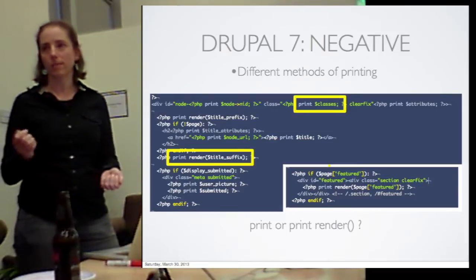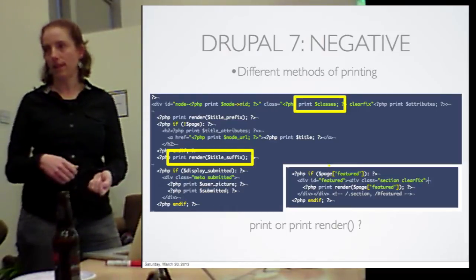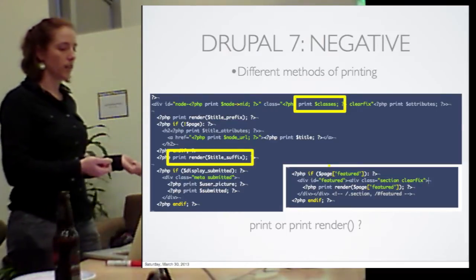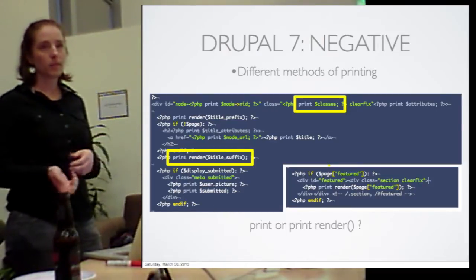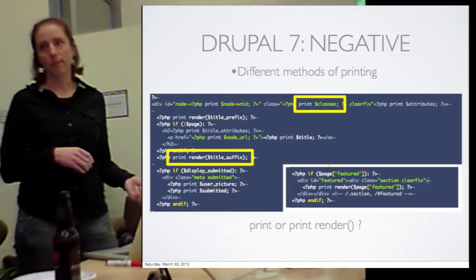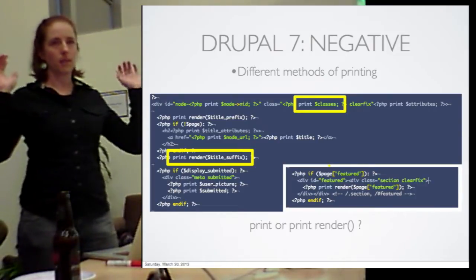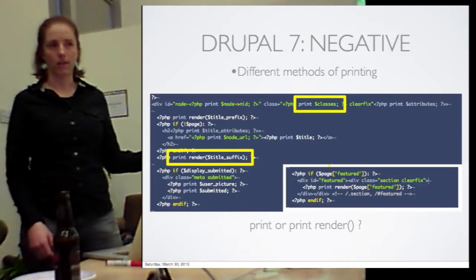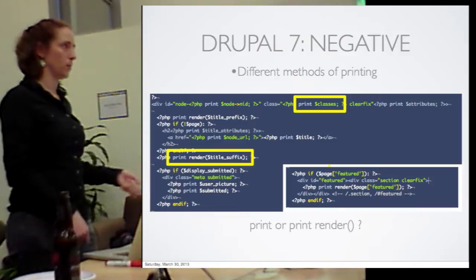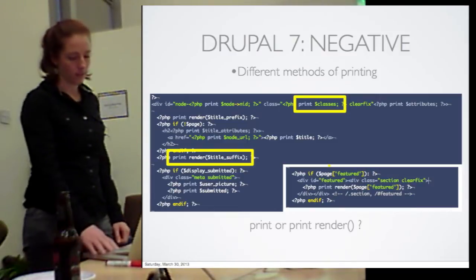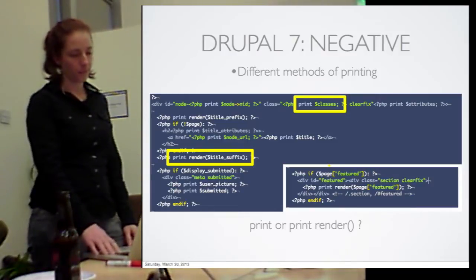If you always had to print render, people would get in the habit of doing that consistently. If you always had to print, people would get in the habit of just printing. But now it's arbitrary — sometimes you render something, sometimes you print render something, and sometimes you just print something. That inconsistency was really confusing for people.